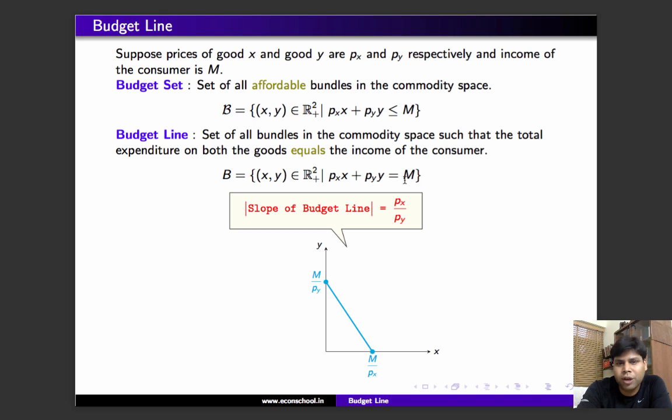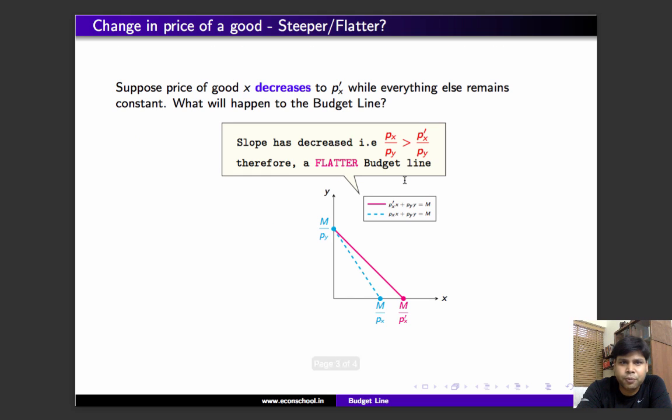Now let's see what happens if the price of x changes, or if income changes. Suppose the price of x decreases from px to px'. Then the budget line will shift from the dashed line to this purple line.